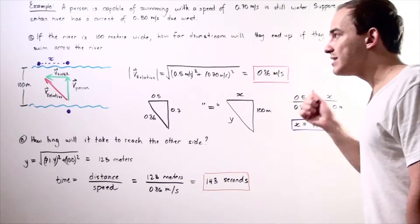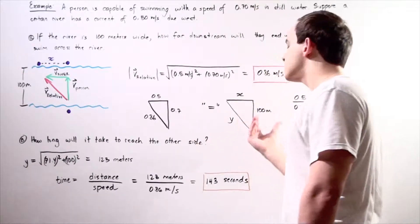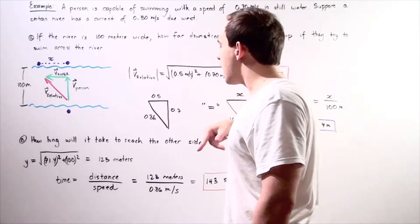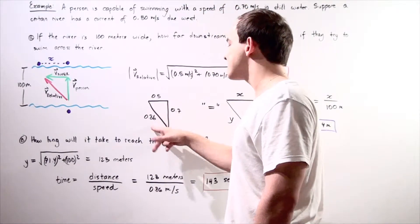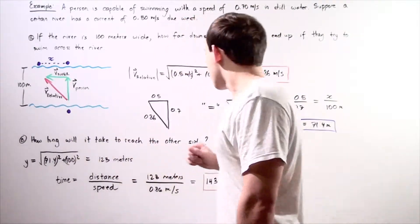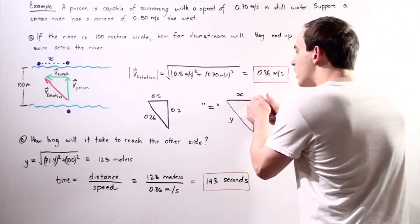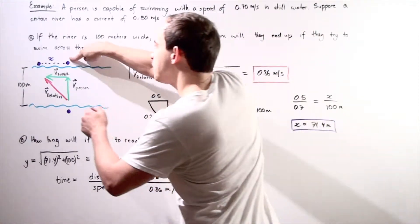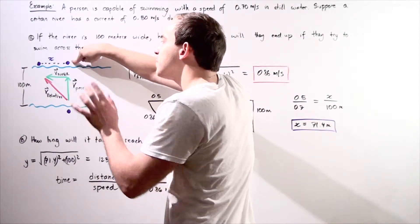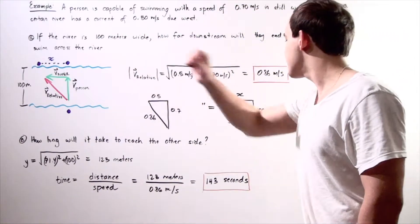What we actually want to find is this distance X. To find this distance X, we have to set up similar triangles. We have 0.5, 0.7, and 0.86 as our velocities. We can draw a similar triangle for the lengths. Here's our 100 meter wide river, and we want to find what X is — the actual displacement between this point and this point, the difference between where the person wants to end up and where they will end up because of the current of 0.5 meters per second due west.